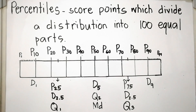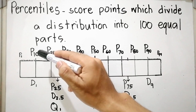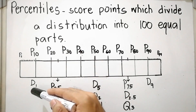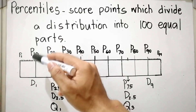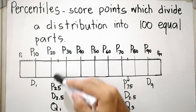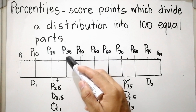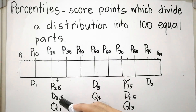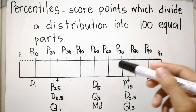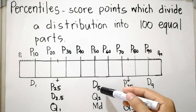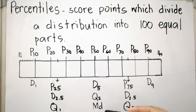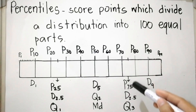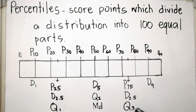Percentiles have equivalent score points to deciles and quartiles. P sub 10 is equivalent to D sub 1, since 10 percent of the data distribution is less than or equal to P sub 10 or D sub 1. P sub 25 is equivalent to D sub 2.5 or Quartile 1, the first quartile. P sub 50 is equivalent to D sub 5 or the median. P sub 75 is equivalent to the third quartile, Q sub 3.